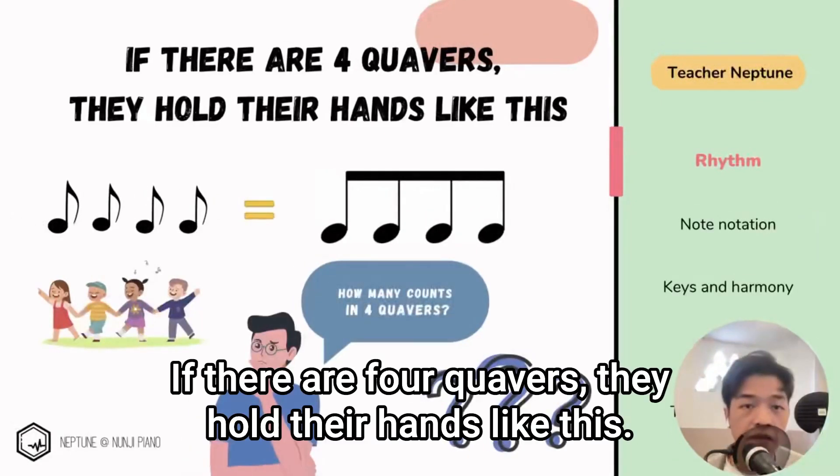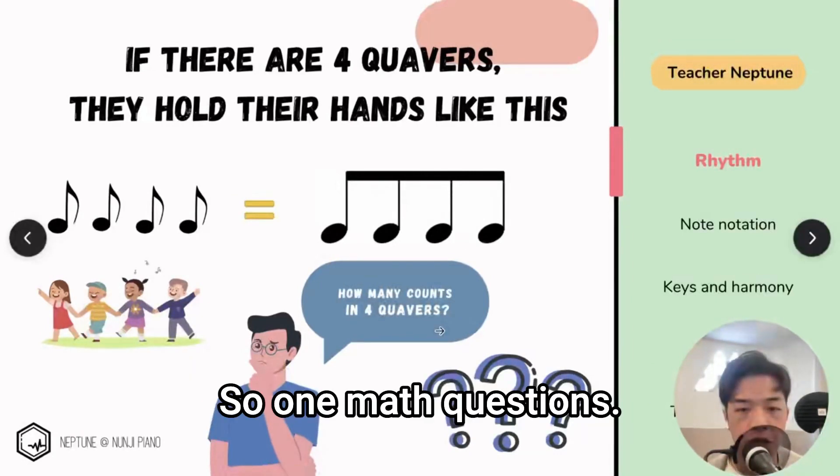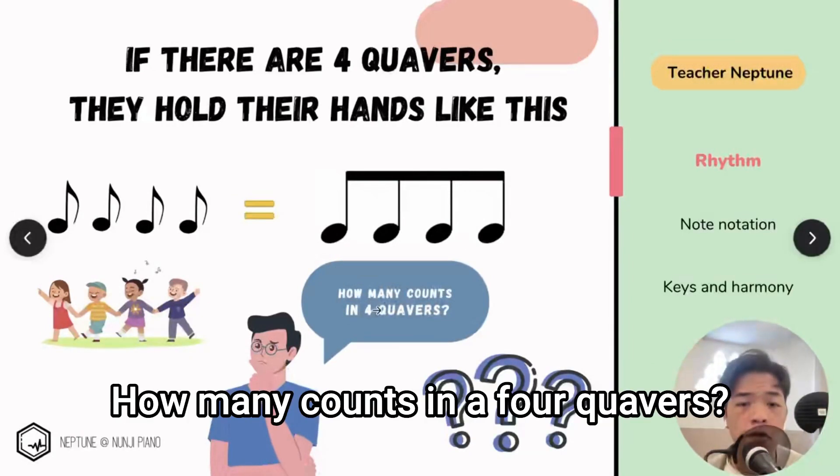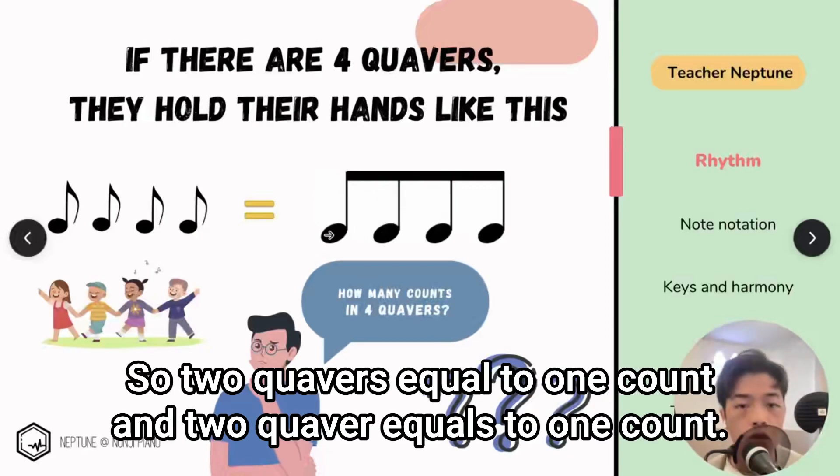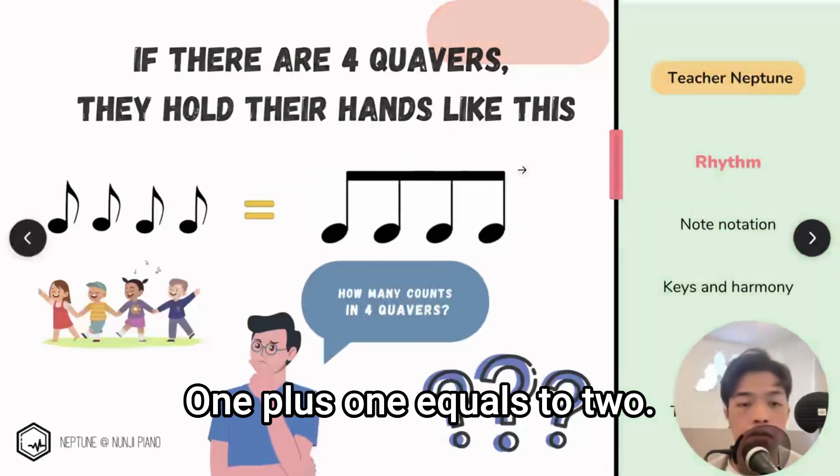If there are four quavers, they hold their hands like this. So one math question: how many counts in the four quavers? Two quavers equals to one count, and two quavers equals to one count. One, one equals to two.